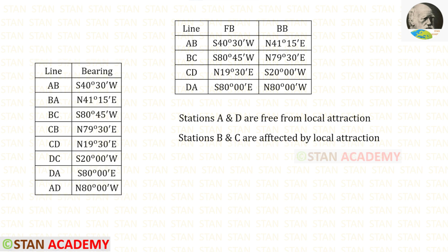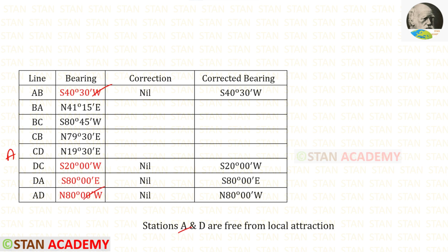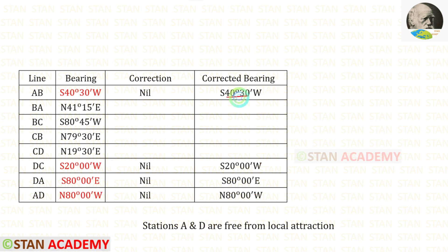Let us make a table with columns for line, bearings, correction, and corrected bearings. Since stations A and D are free from local attraction, the readings taken from station A and station D will be correct. So for those four readings, no correction is required, and we can directly enter them in the corrected bearings column.